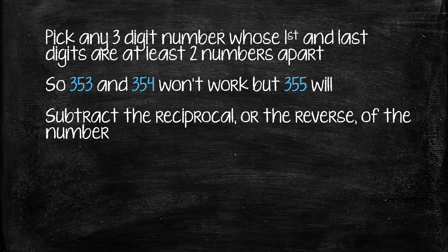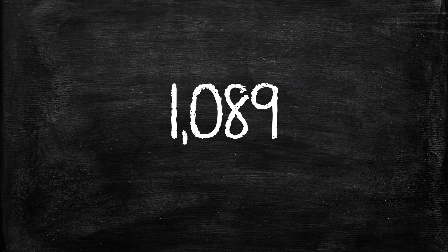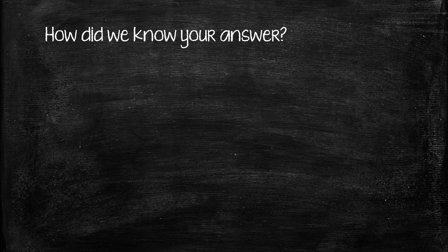Then you're going to subtract the reciprocal, or the reverse, of the number, and then you're going to add the reciprocal of the answer that you just found. And when you do that, your answer will be 1089. We know what the answer is going to be ahead of time.